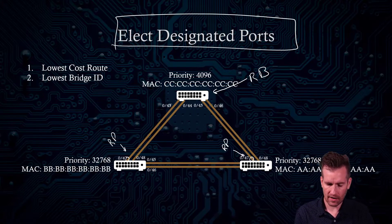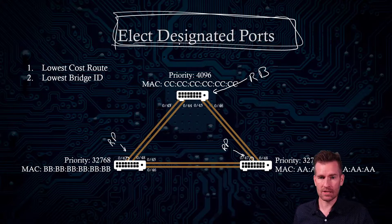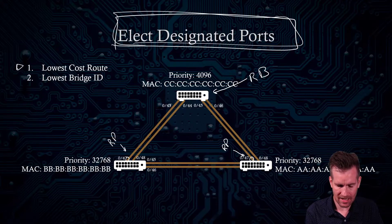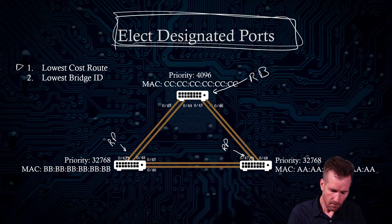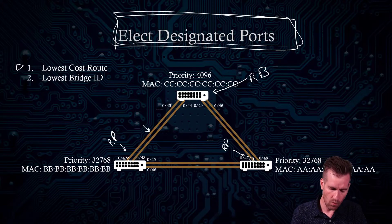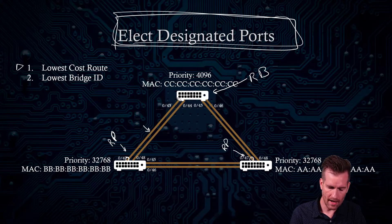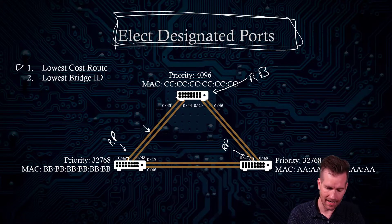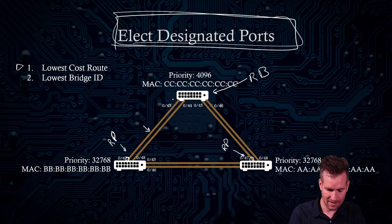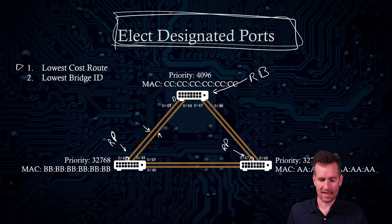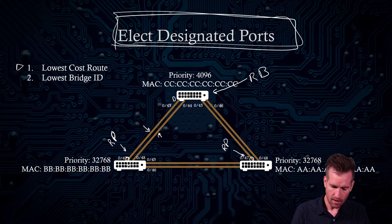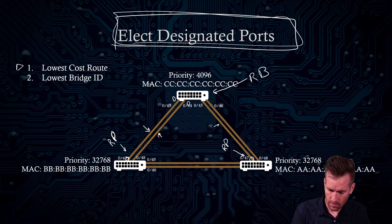There are really just two criteria for electing designated ports. First is the lowest cost to the root, and this is evaluated link by link. For the first link, we ask which port — on switch two or switch one — is the designated port. Since switch one is the root bridge, it has the designated port. Moving to the next link, whichever side is closest to the root bridge becomes the designated port.